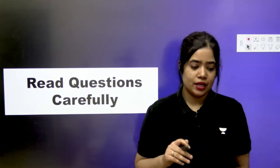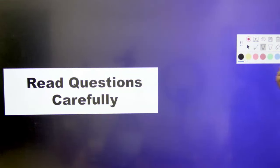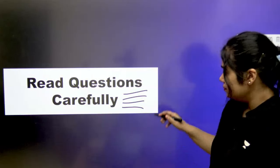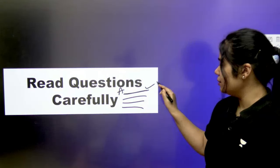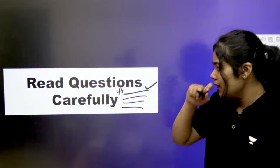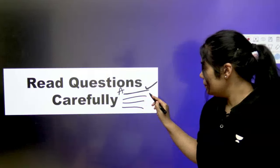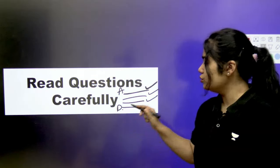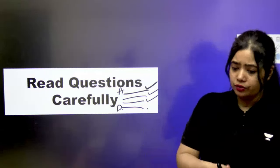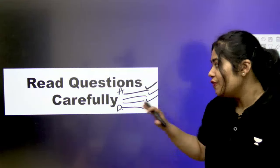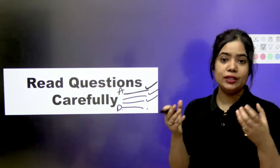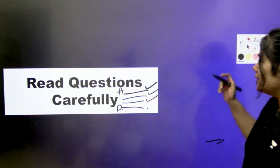Read the full question to understand what is being asked. For example, if the question says 'find the correct statement' and you read option A and feel it's correct, don't just click it immediately. If you read carefully, B might also be right, C might also be right, and D could be 'All of the Above' — which would be the right answer. Nervousness, overconfidence, or rushing can cost you marks. Attempt questions in the exam hall calmly and peacefully.